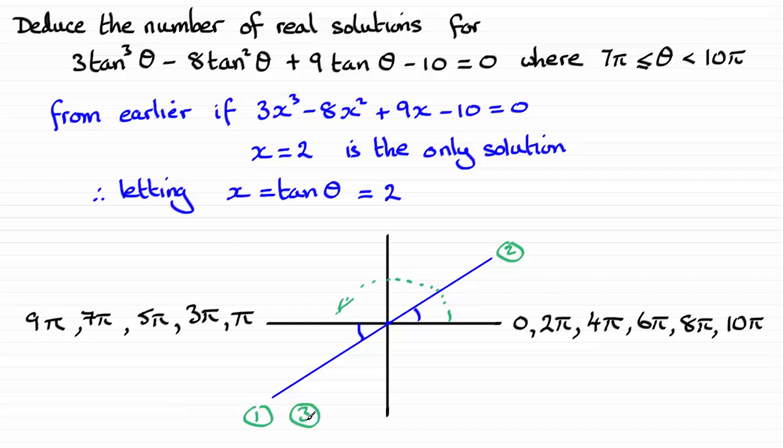So once I carry on beyond here, I'm going to be going to this one, but I'm going to pass the 10π. So can you see then that there's going to be a total of three solutions?